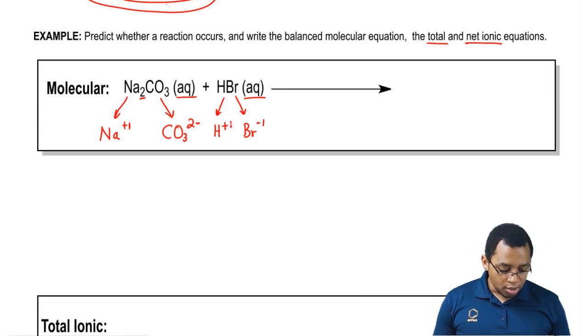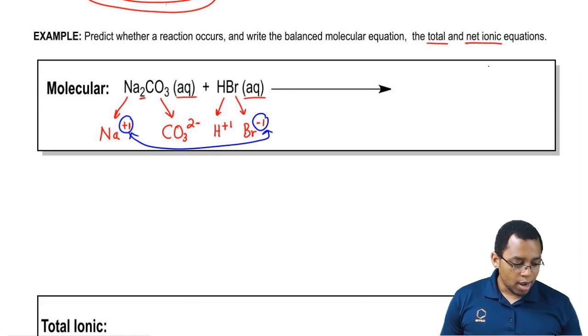Next we're going to switch partners. This positive ion is attracted to this new negative ion. So here we're going to write NaBr.